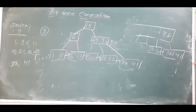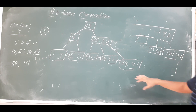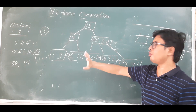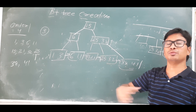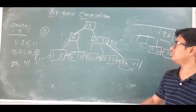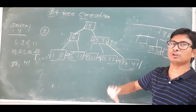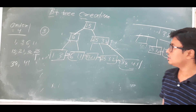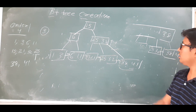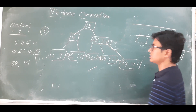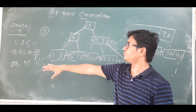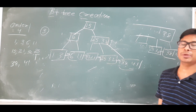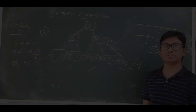We have taken all scenarios: when there is an overflow in a leaf node, and when there is an overflow in a non-leaf node. All elements have been inserted successfully. For order 4 and the given 10 elements, this is the final B+ tree. Thank you so much.